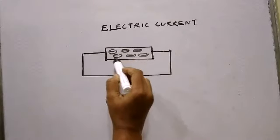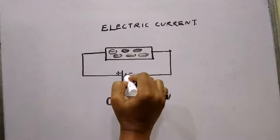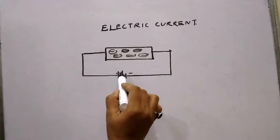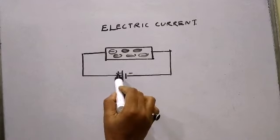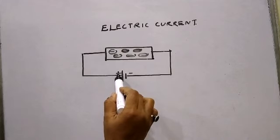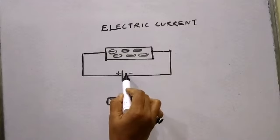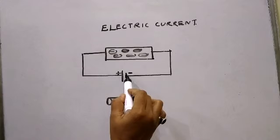This is a metal conductor, and this metal conductor is connected to a cell by means of a conducting wire. This cell has a longer line which represents a positive terminal of the cell. The positive terminal indicates that here there are excess of positive charges and there are deficit of negative charges. The shorter line stands for the negative terminal of the cell, which indicates that here there are excess of negative charges but there are deficit of positive charges.